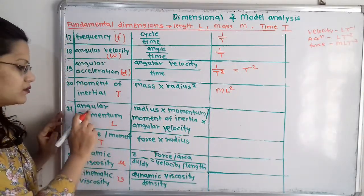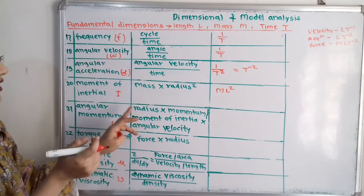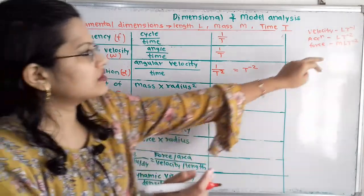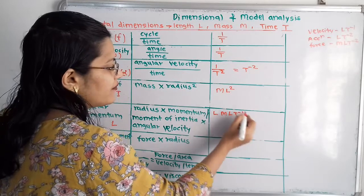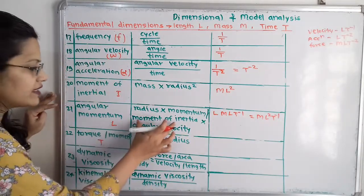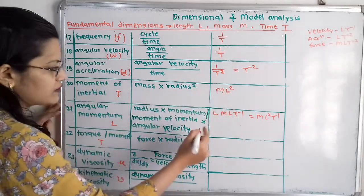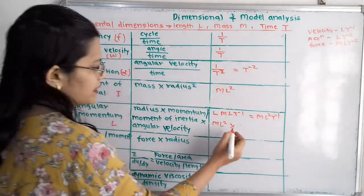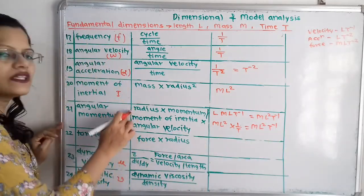Then angular momentum, notation capital L, equals radius into momentum. Radius is length L, and momentum is mass into velocity, so M into L into T raised to minus 1. Multiplied by radius L gives ML squared T raised to minus 1. It is also defined as moment of inertia times angular velocity: M into L squared times 1 by T also gives ML squared T raised to minus 1.